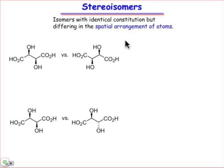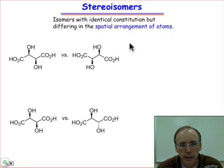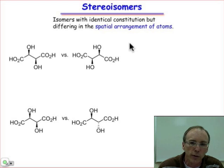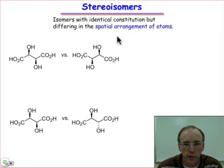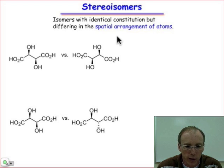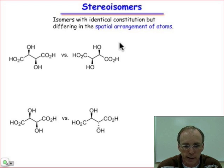Stereoisomers are structures that have identical constitution, but they differ according to the spatial arrangement of the atoms. You can't superimpose them simply by a translation or rotation, as in the preceding example.